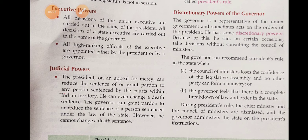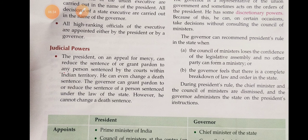What is the judicial power? The President, on an appeal for mercy, can reduce the sentence or grant pardon to any person sentenced by a court within Indian territory. He can even change a death sentence. The Governor can grant pardon to or reduce the sentence of a person sentenced under the law of the state.